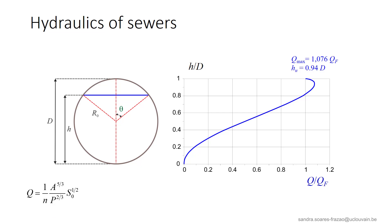Close to the full filling of the pipe, a small increase in h will result in a small increase in A, but in a large increase of P. This explains the presence of a maximum in the discharge curve.